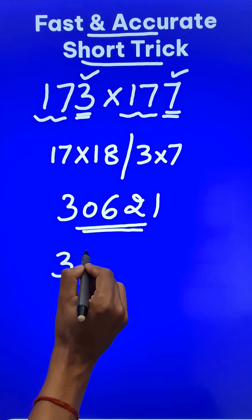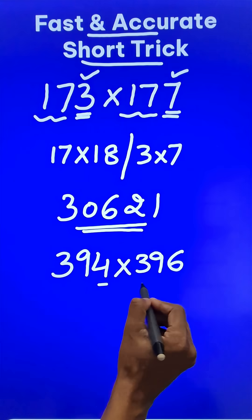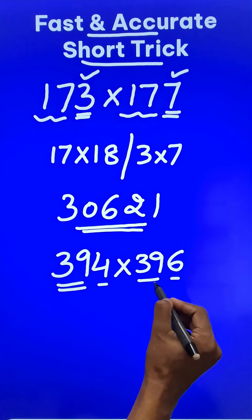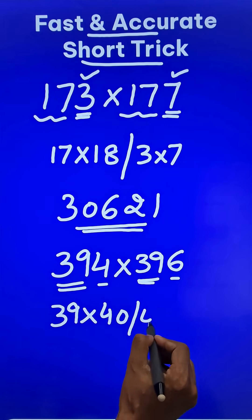Let us try one more: 394 and 396. So 4 plus 6 is 10 and the remaining number is 39. So 39 times 40, and then 4 times 6.